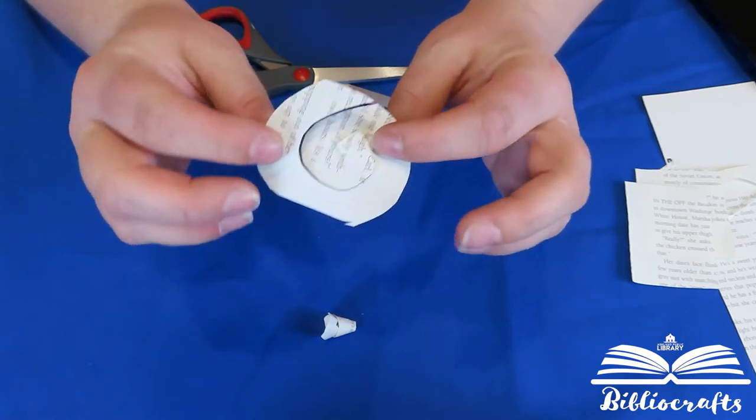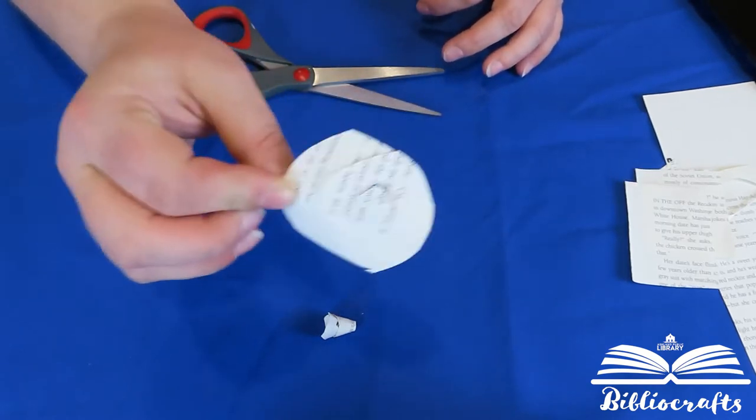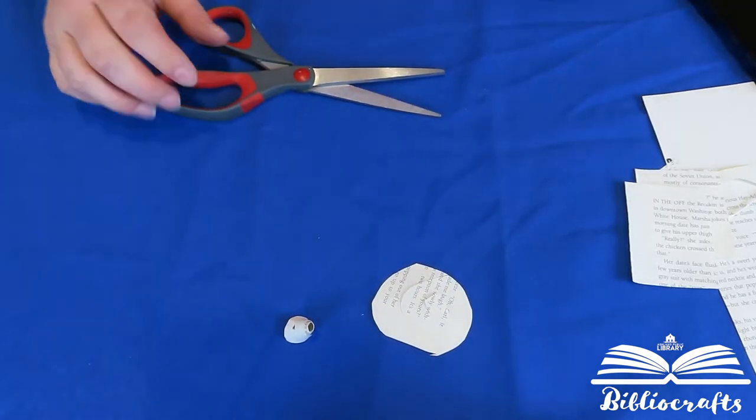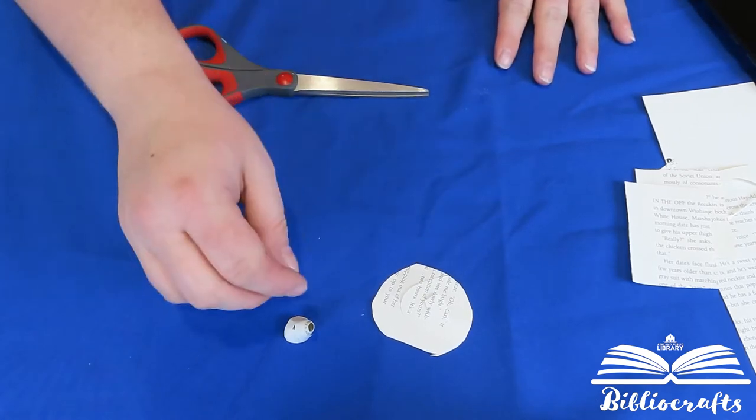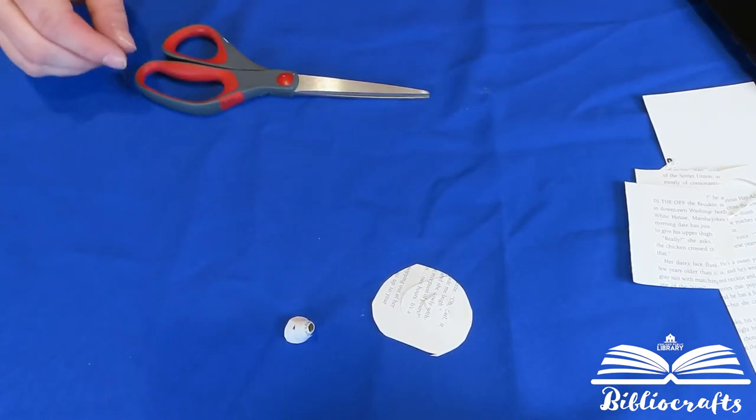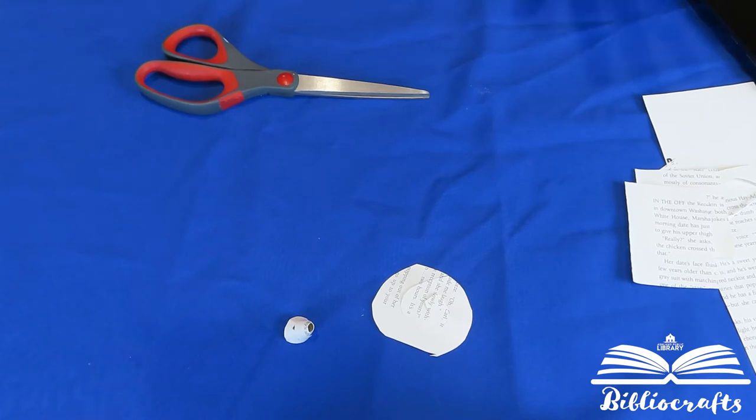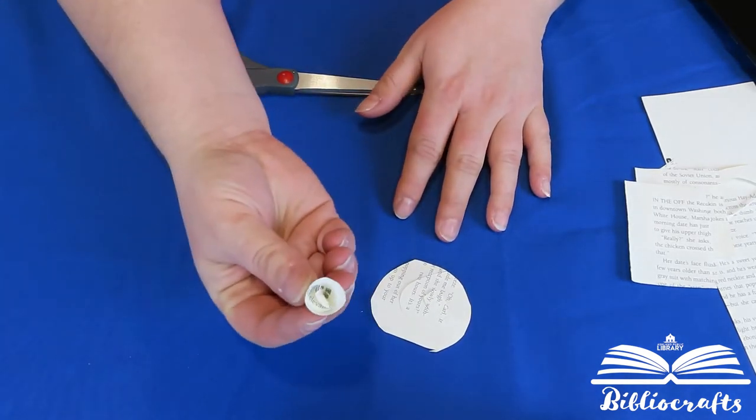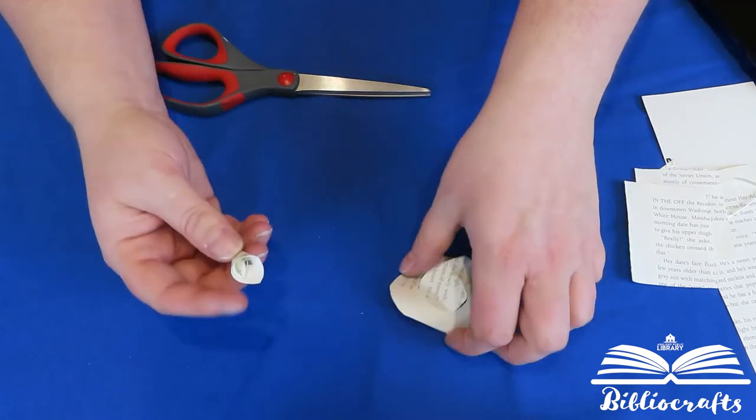There we go and you will need a bunch of these depending on the bigger your picture frame, the more spirals you will need. And then let me show you how to glue these together.